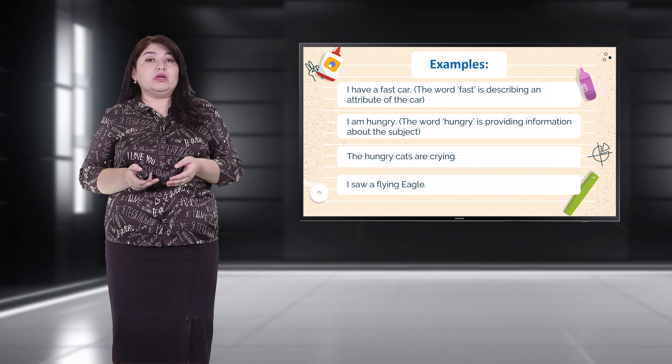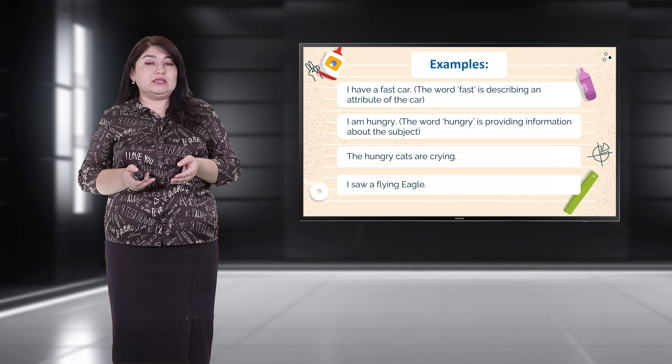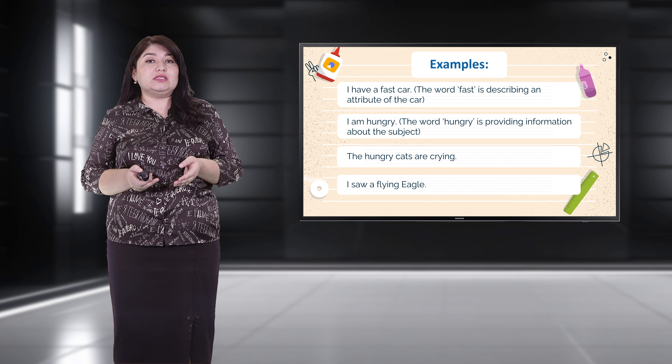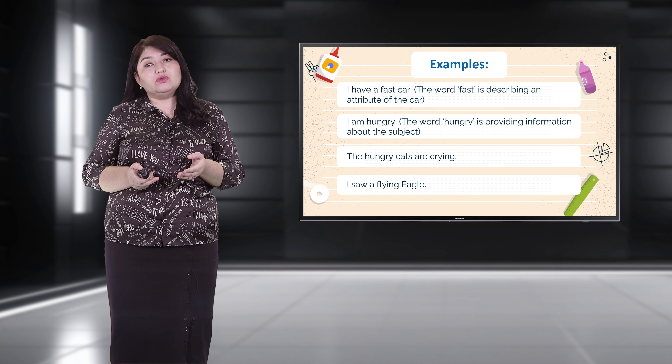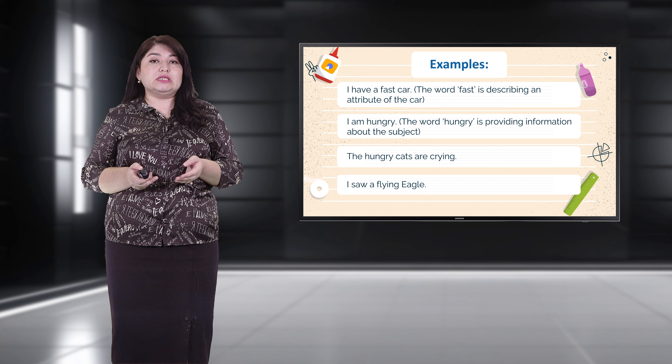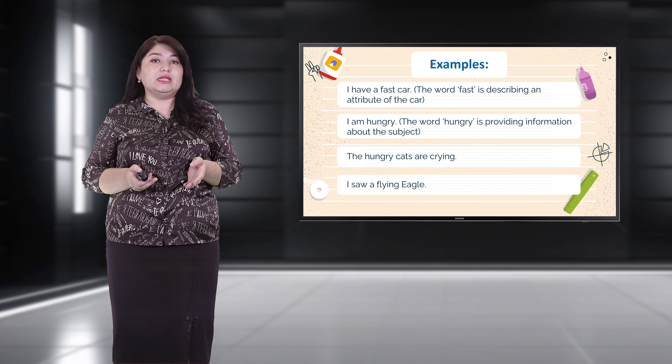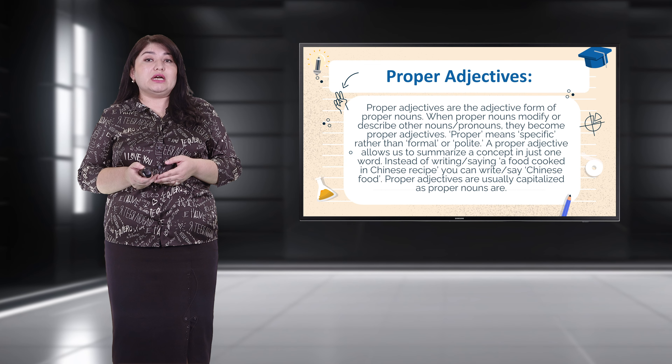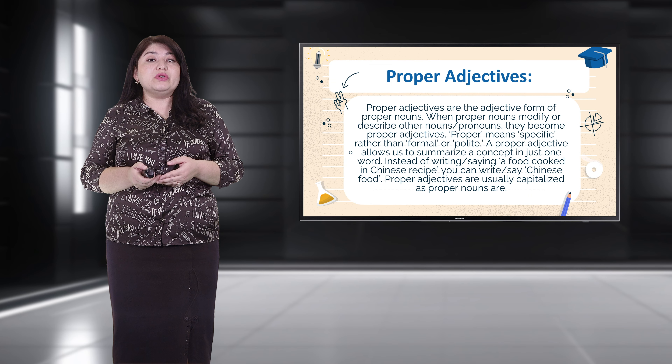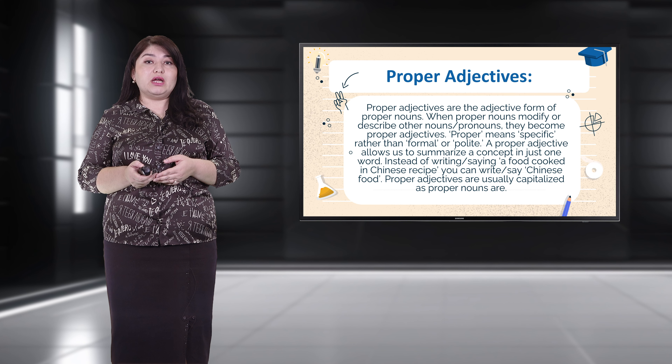'I saw a flying eagle.' Quantitative adjectives provide information about the quantity of nouns or pronouns. This type belongs to the questions 'how much' and 'how many.' For example: 'I have 20 bucks in my wallet' — how much. 'They have three children' — how many. 'You should complete the whole task' — how much.